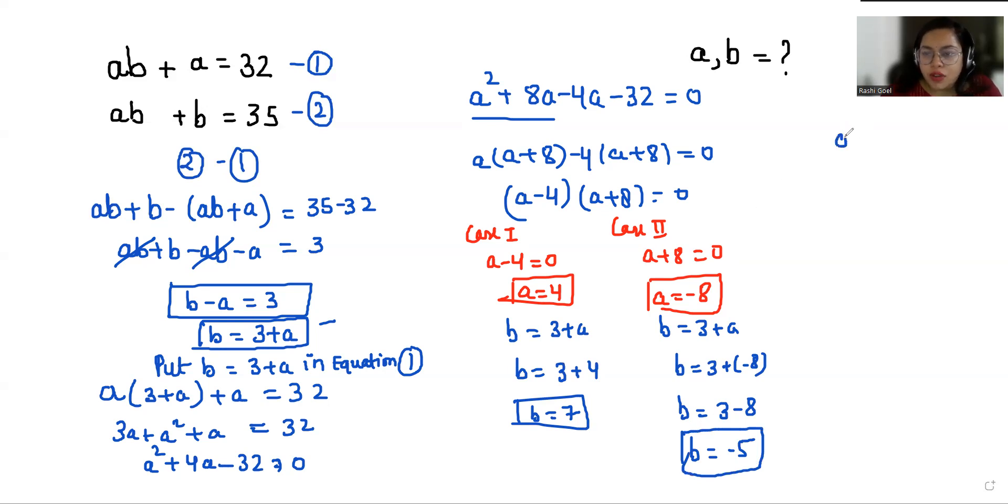So the value of A is 4, then B is 7. And the value of A is negative 8, so B is negative 5. These are the values of A and B.